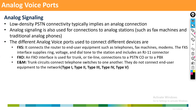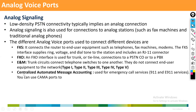ENM (ear and mouth / earth and magnet) is also used to connect from the router to PSTN, with connection types T1 through T5. Nowadays we don't use ENM much. CAMA — Centralized Automated Message Accounting — is a dedicated connection used only in the US for 911 emergency services. This connection carries only emergency calls, and it is designed only for use in the US.